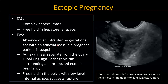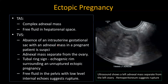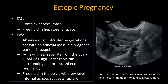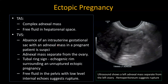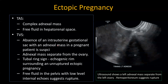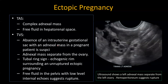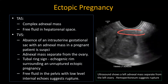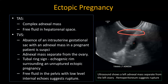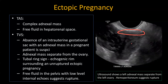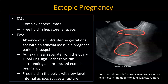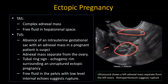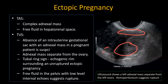Ectopic pregnancies were discussed in detail in our pelvic emergency talk — watch that if you haven't already. Briefly, if you don't see an intrauterine gestational sac and there is an adnexal mass separate from the ovary, that would suggest an ectopic pregnancy. In this case, the left ovary is displaced anteriorly, there is a separate left adnexal mass, and there is moderate volume hemoperitoneum evident by low-level internal echoes — this was a ruptured ectopic pregnancy.